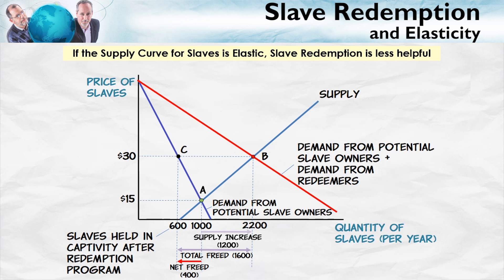The more elastic the supply curve is, the less successful the program can be and the more terrible the trade-offs. And if we remember that supply curves get more elastic in the long run, that's exactly what we saw in the case of Sudan. At the beginning, the redemption program increased the price of slaves a lot. But as the supply curve became more elastic over time, the price of slaves began to fall back down, and the redemption program became less successful over time. This is a very tricky and controversial issue. Did groups like Christian Solidarity International do net good? Economics can't answer this question, but it can point to the supply response and what that means in moral terms.